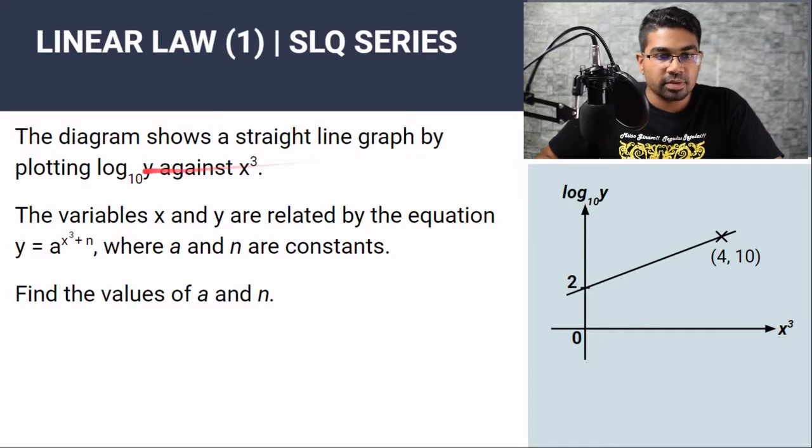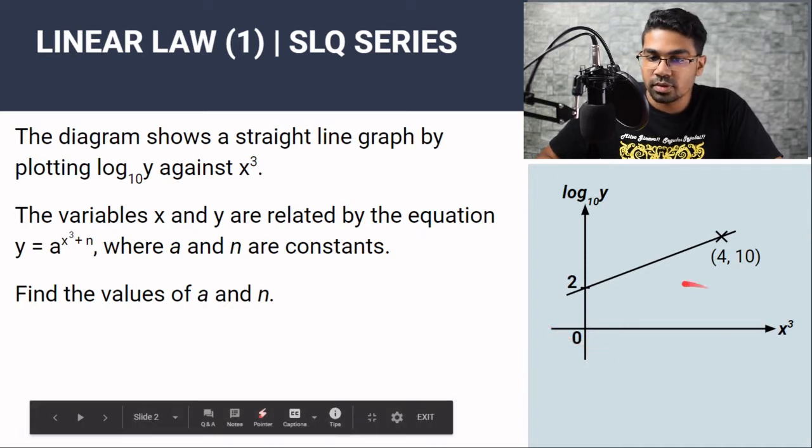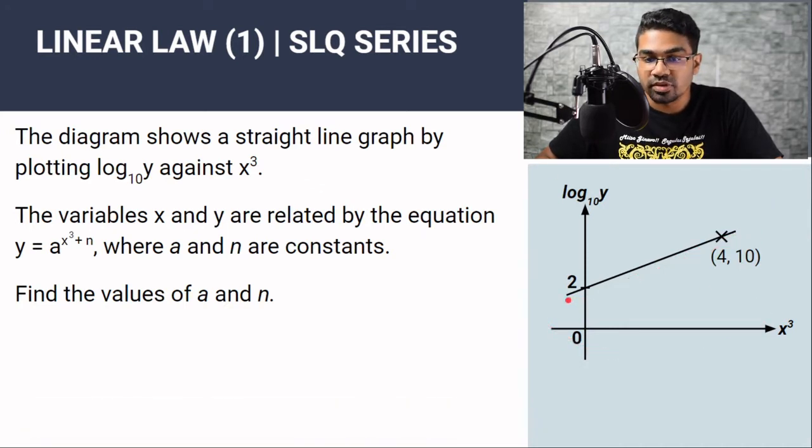Let's get right to the question. The diagram shows a straight line graph by plotting log₁₀y against x³, as seen in this diagram here. So here we have a linear relation. It's a straight line. The variables x and y are related by the equation y equals a to the power of x³ plus n. So this relation here is not a linear relation. It cannot be written in the form y equals mx plus c, our slope intercept form.